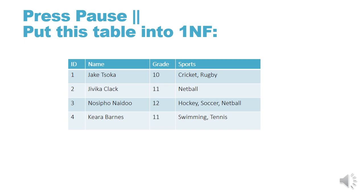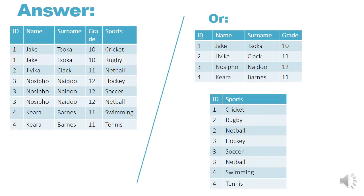You can press pause here and try to put this table into first normal form — the answer is coming up now. One possible way is to create new rows for each sport that a learner does, or you could move the sports and IT into a separate column. Note: ID and sports together form the primary key. This is the end of the slideshow — have a good week, see you another time.